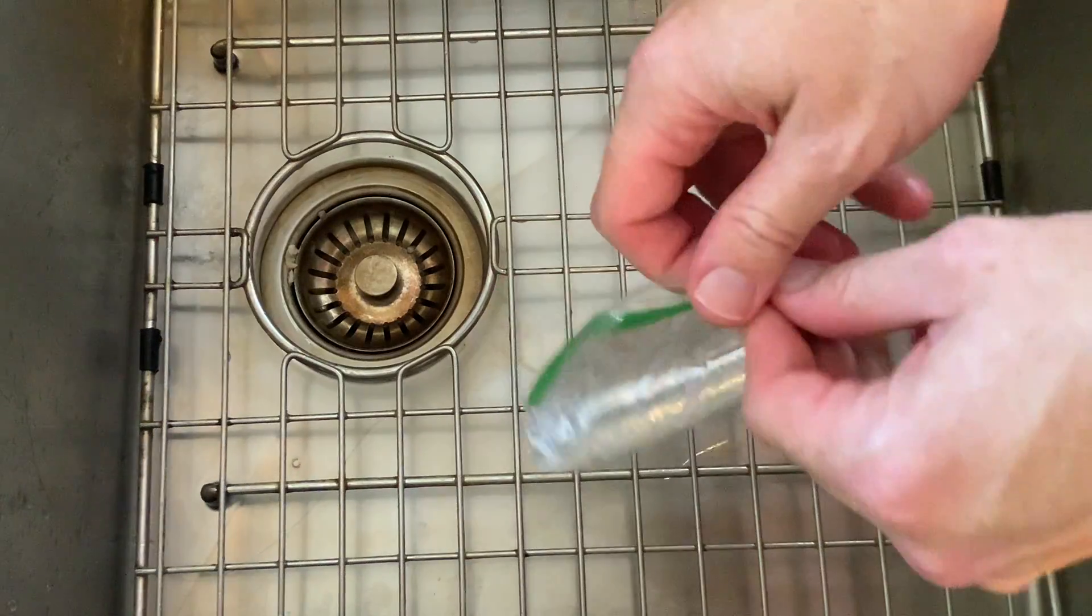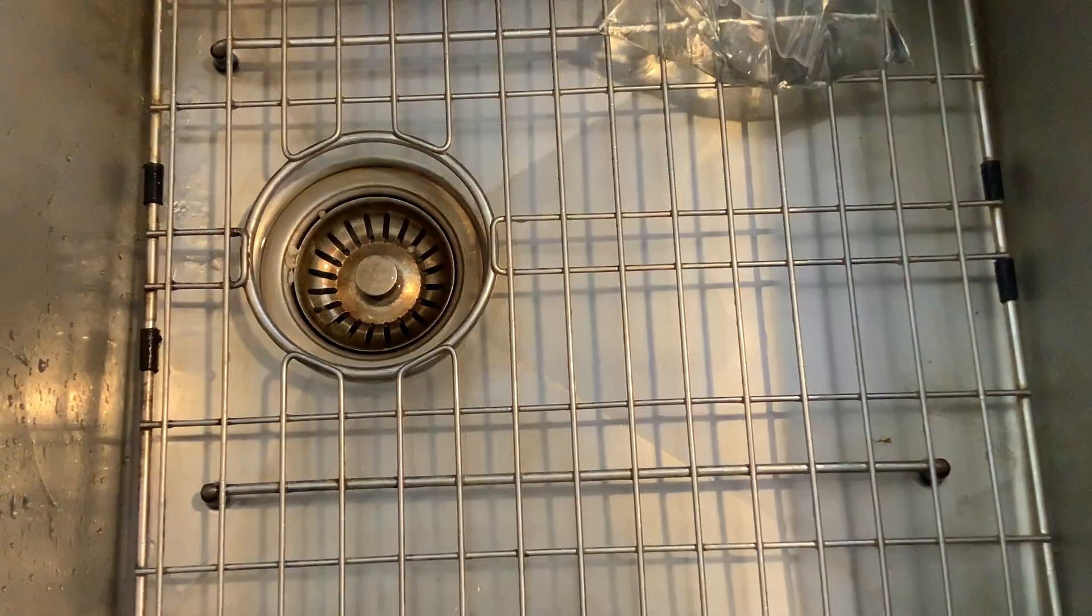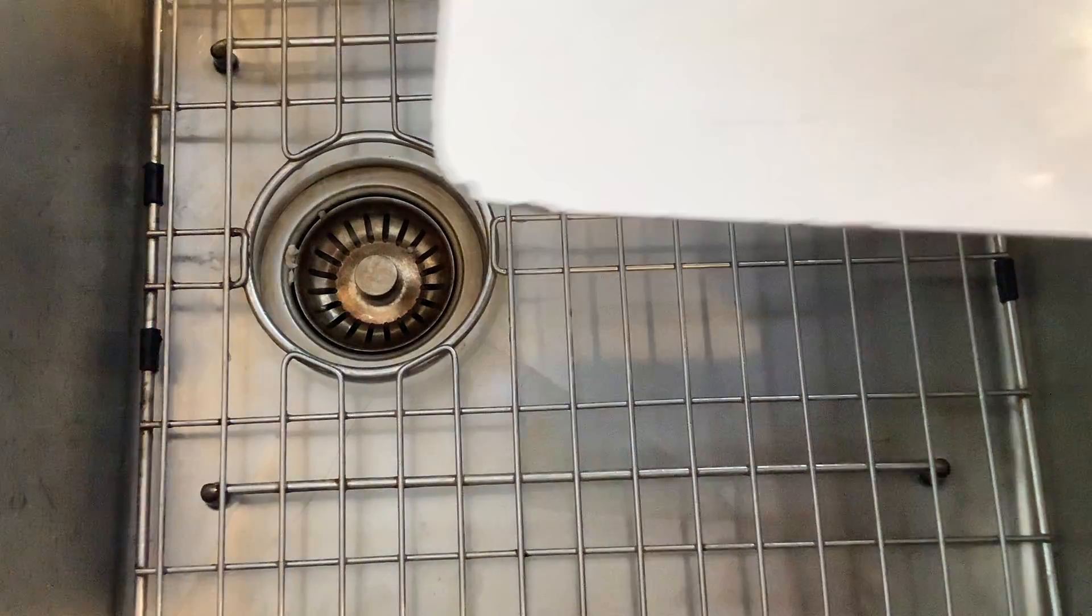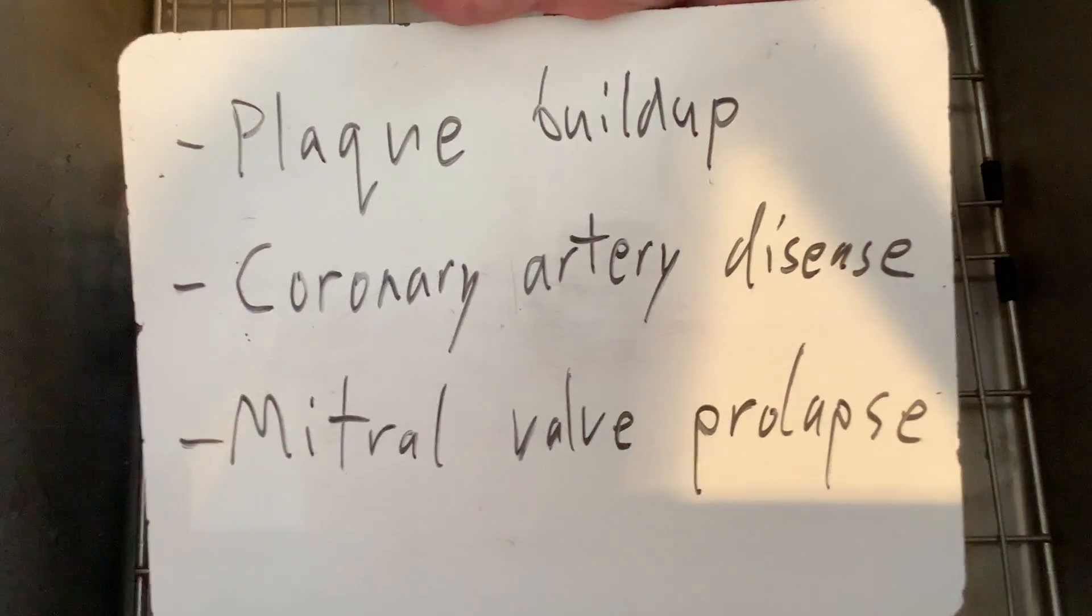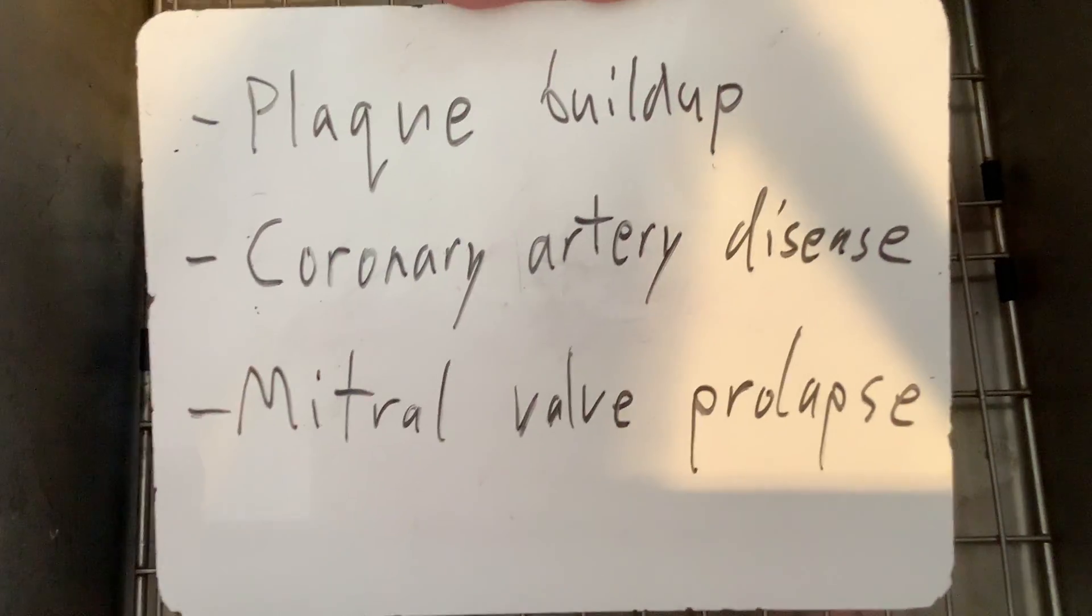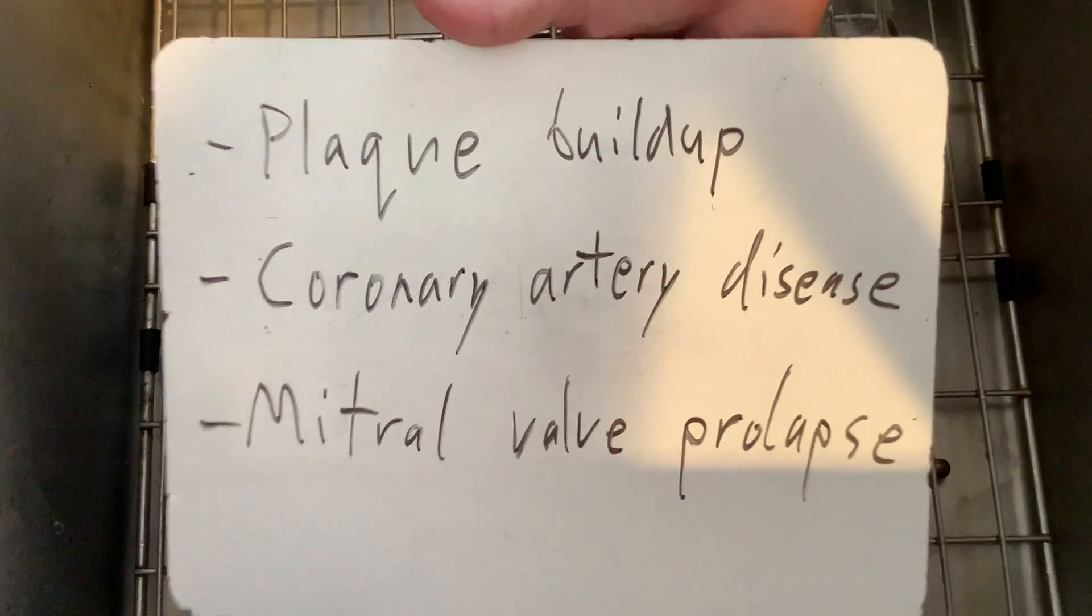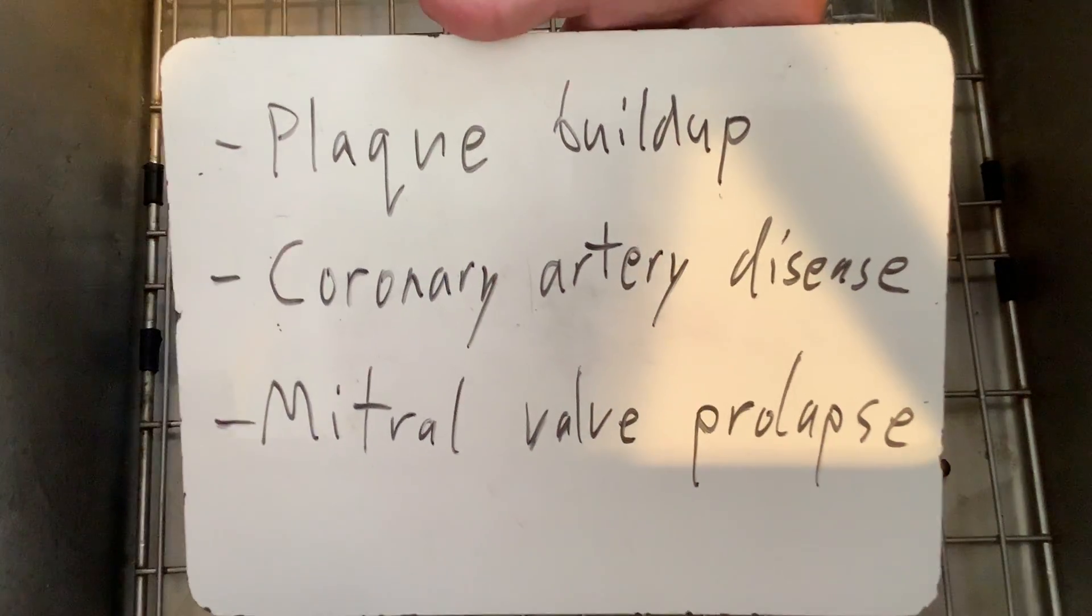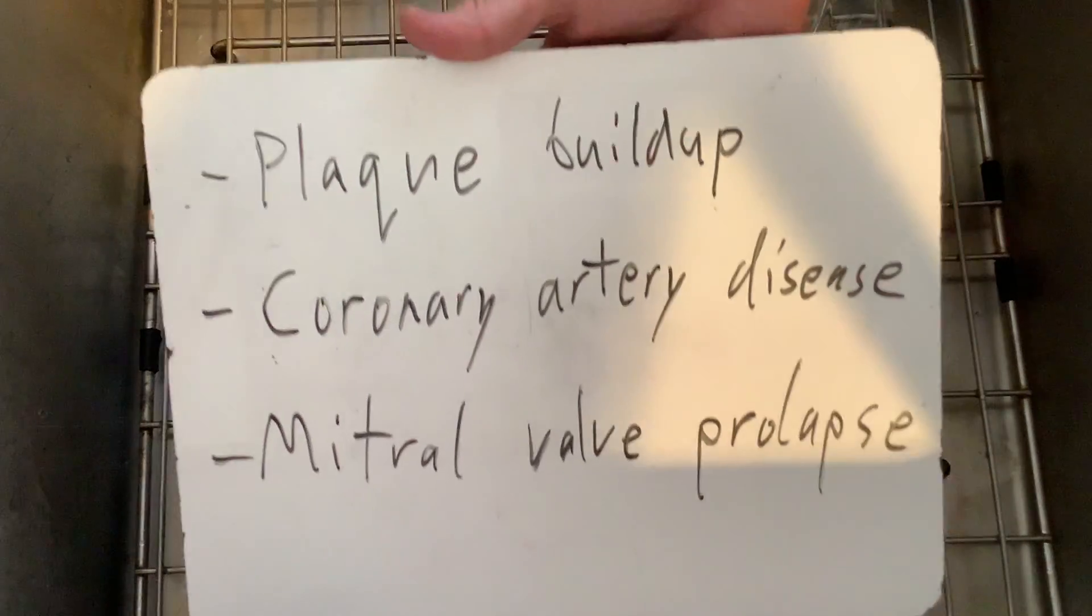All right, we are now going to try to demonstrate three common heart conditions: plaque buildup, coronary artery disease, and mitral valve prolapse. I'm not going to tell you which demonstration represents which. That's something you have to do in your video. So you're going to record yourself doing these things, but I want you to tell me which one do you think represents plaque buildup, which one is coronary artery disease, and which one is mitral valve prolapse.